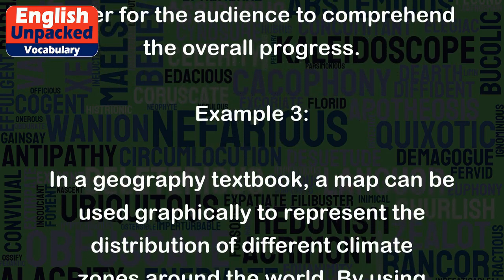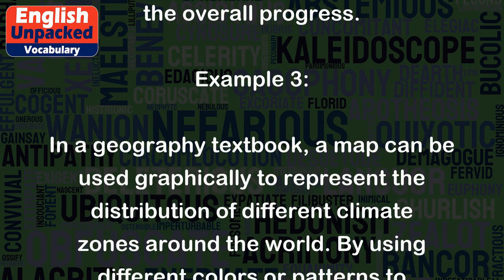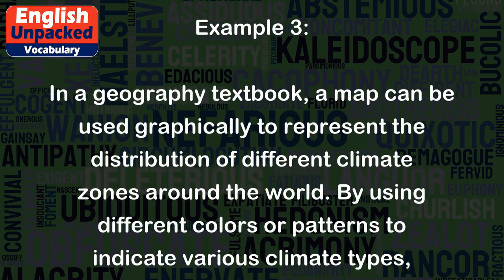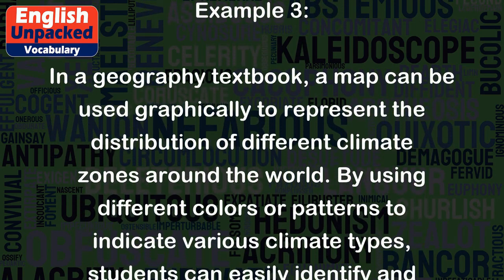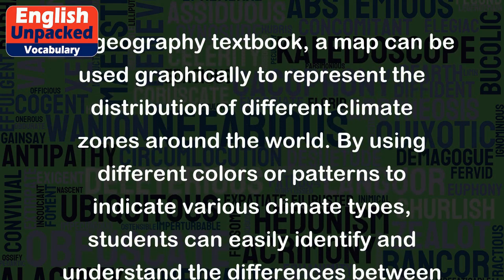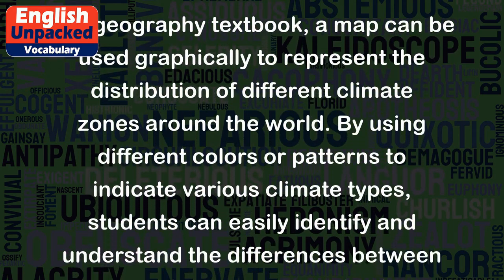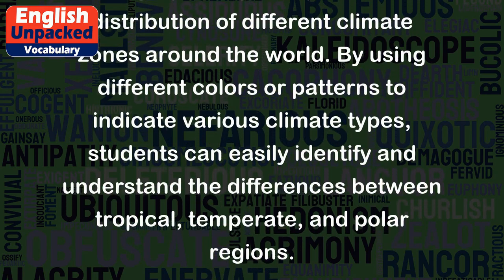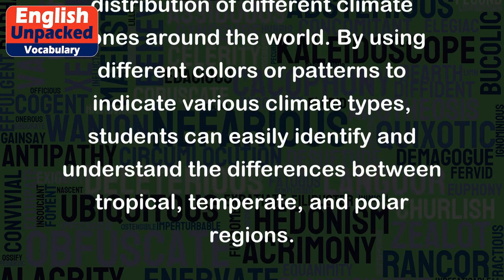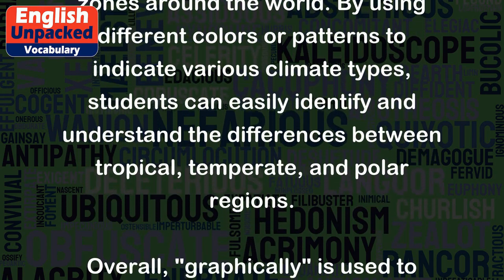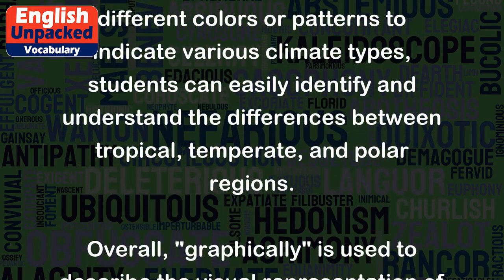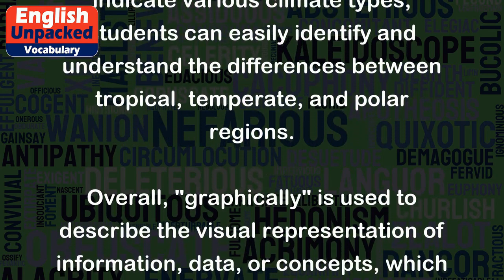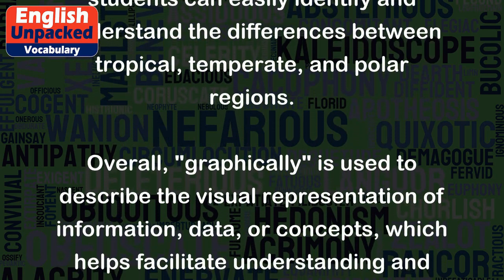Example 3. In a geography textbook, a map can be used graphically to represent the distribution of different climate zones around the world. By using different colors or patterns to indicate various climate types, students can easily identify and understand the differences between tropical, temperate, and polar regions.